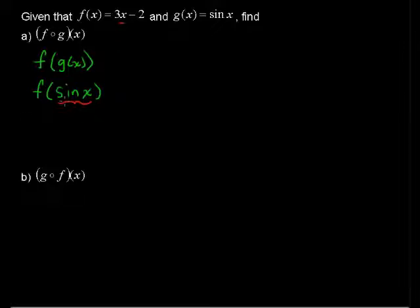So f of sine of x then equals 3 times—instead of x, I'm going to write sine of x—and then I'll finish with minus 2. And that's it. That is f composed with g of x.